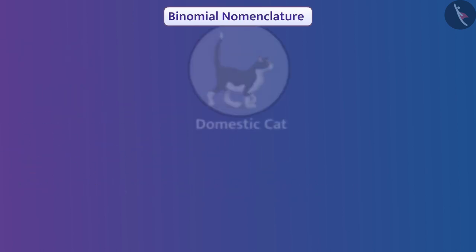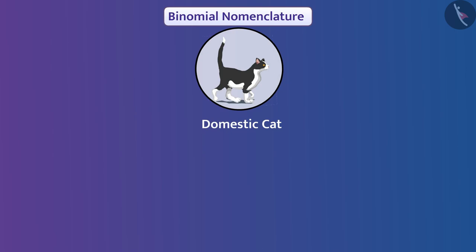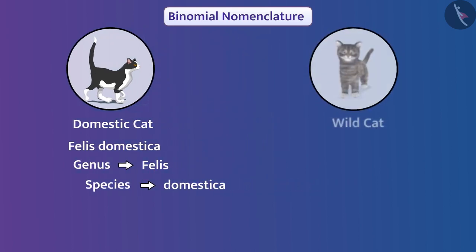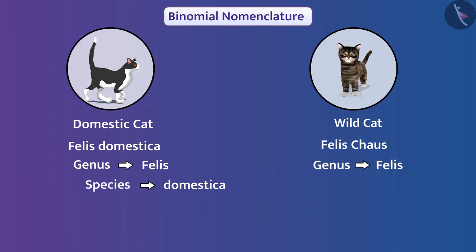For example, a domestic cat has the scientific name Felis domestica, which means the domestic cat belongs to genus Felis and species domestica. Similarly, a wild cat has the name Felis chaus, in which Felis is the genus and chaus is the species.